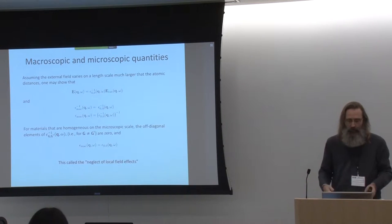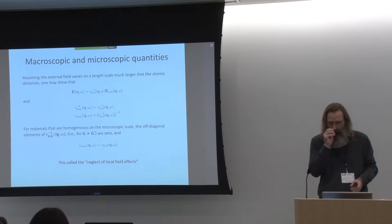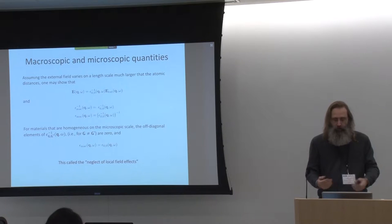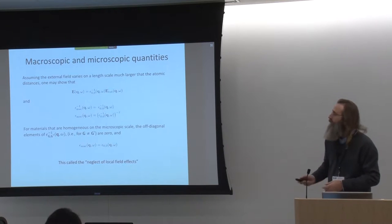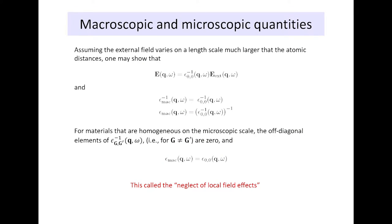The assumption that the material is homogeneous on a microscopic scale is what we call a neglect of local field effects. This is a term you will see in literature — I just want to give you a feeling for what it means when you encounter it.